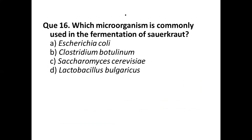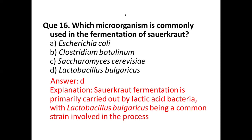Question number sixteen: which microorganism is commonly used in the fermentation of sauerkraut? Options are: (a) E. coli, (b) Clostridium botulinum, (c) Saccharomyces cerevisiae, (d) Lactobacillus bulgaricus. The correct answer is option (d) Lactobacillus bulgaricus. Sauerkraut fermentation is primarily carried out by lactic acid bacteria, with Lactobacillus bulgaricus being a common strain involved in the process.